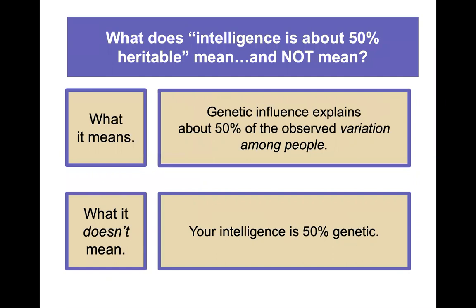What does it mean that intelligence is about 50% heritable, and what does it not mean? What it means is that genetic influence explains about 50% of the observed variation among people. What it doesn't mean is that your intelligence is 50% genetic — it's important to get that clear.